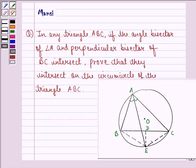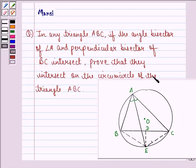Hello and welcome to the session. My name is Mansi and I am going to help you with the following question. The question says: in any triangle ABC, if the angle bisector of angle A and the perpendicular bisector of BC intersect, prove that they intersect on the circumcircle of the triangle ABC. So let us start with the solution to this question.